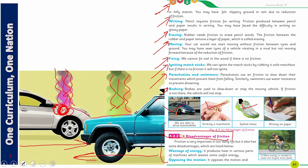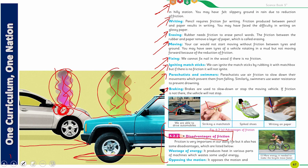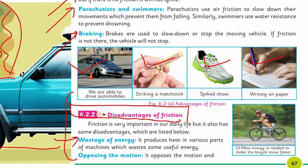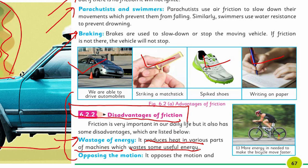کچھ انرجی یہاں پہ ویسٹ ہو رہی ہے۔ اگر یہ فریکشن ہم کم کر سکیں یا ختم کر سکیں تو یہ انرجی جو اوپر ضائع ہو رہی ہے وہ بھی ہمارے کام آ سکتی ہے۔ نمبر ون: Wastage of Energy — it produces heat in various parts of machines which wastes useful energy. اگر اس انرجی کو ہم روک لیں اور فریکشن کو ریڈیوز کر سکیں — نئی ٹیکنالوجی میں فریکشن کم سے کم کی جا رہی ہے۔